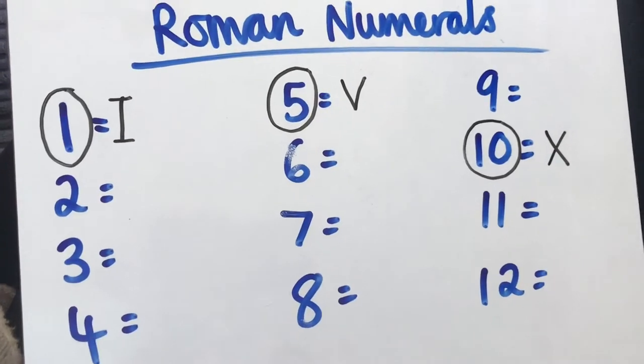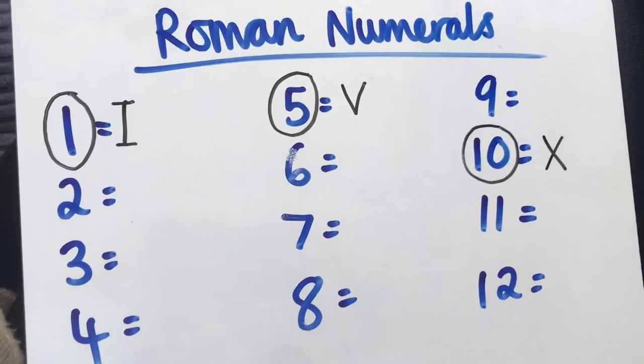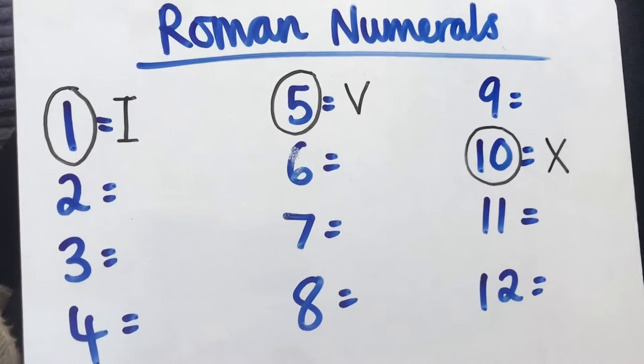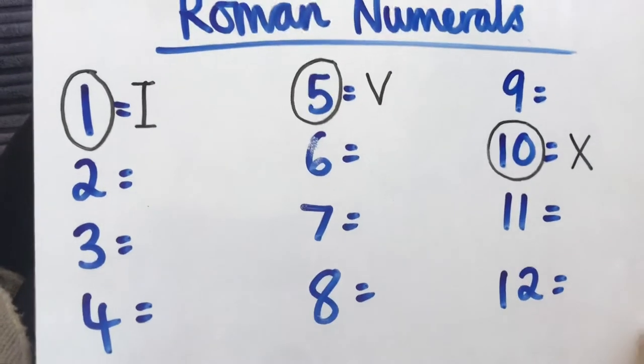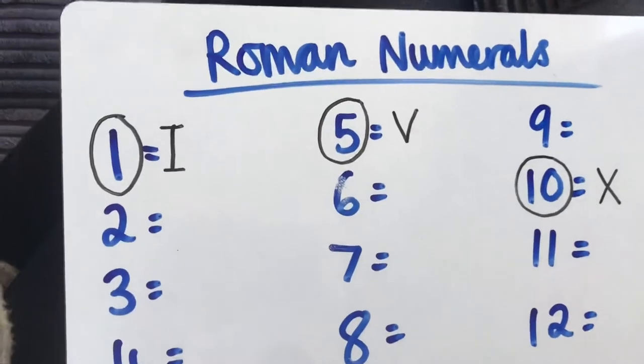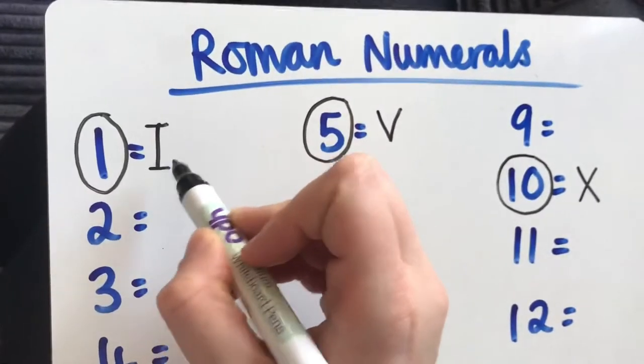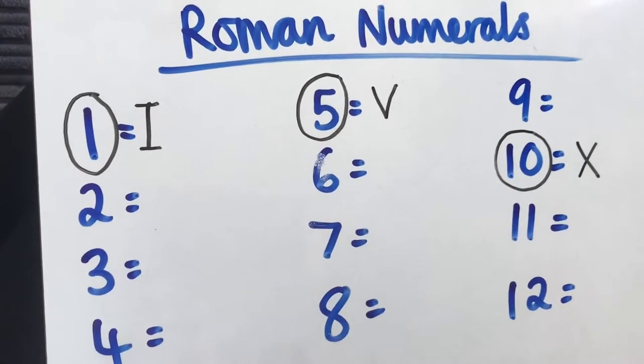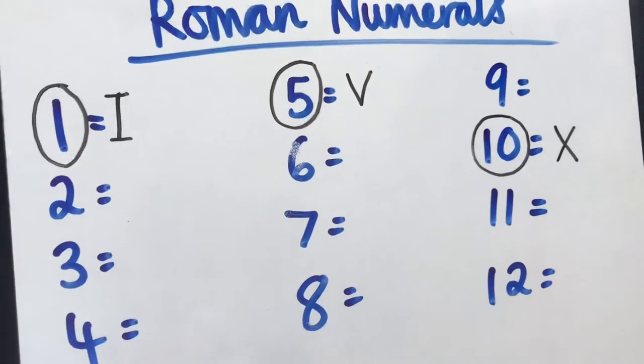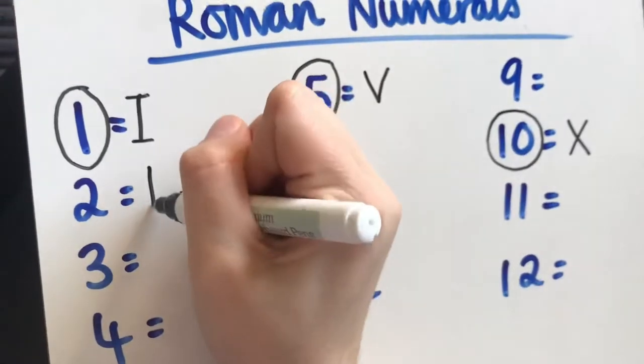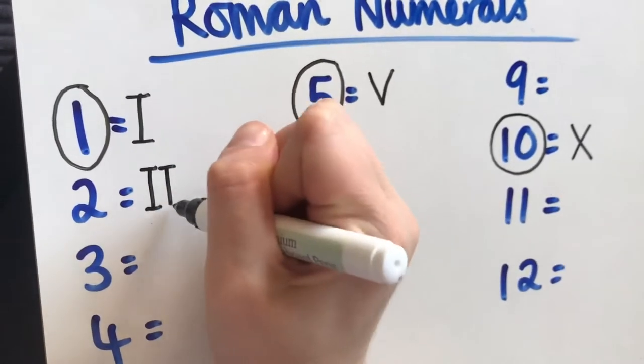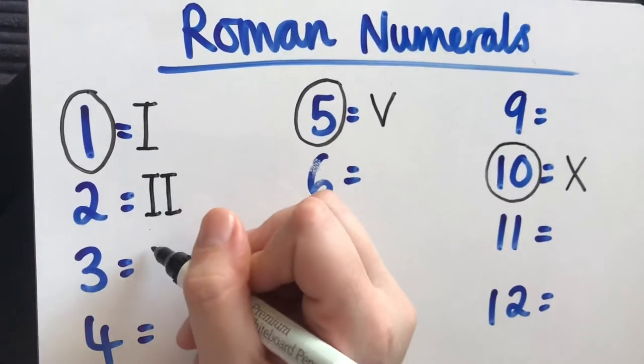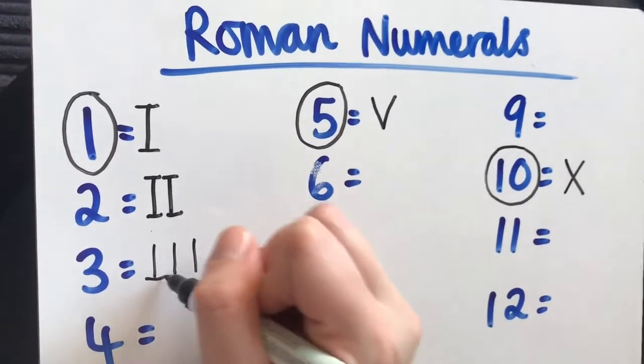All the other numbers can be a bit tricky, but if you know the rule, if you understand this rule that I'm going to tell you in a minute, that will help you. So if we do number 2, if one I is 1, what do you think the number 2 is going to be in Roman numerals? It's going to be two I's next to each other like that, I-I. The number 3 is three I's.